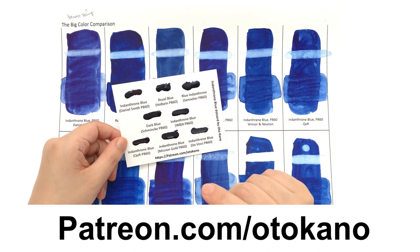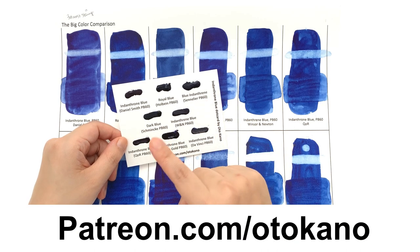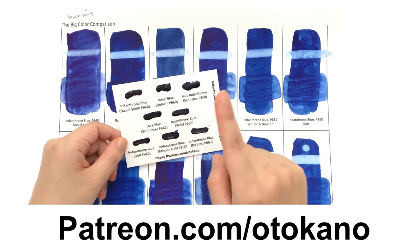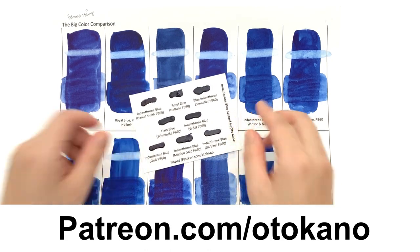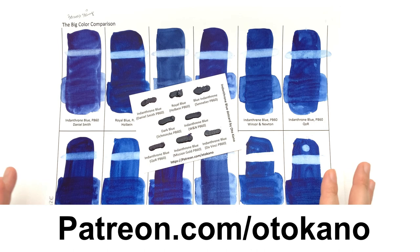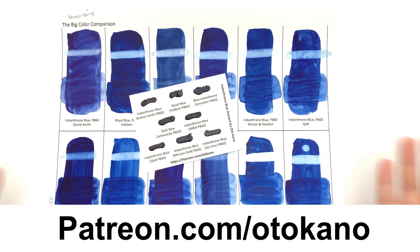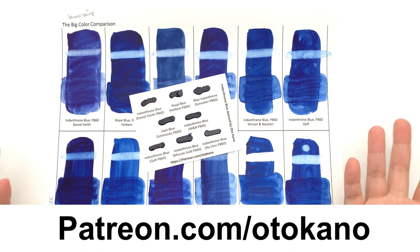It has the Daniel Smith, the Holbein, the Sennelier, the Schmincke, the Windsor Newton, QoR, Mission Gold, and Da Vinci. So if you do fancy trying these colors out for yourself at home and you want to do these tests, then sign up for the $17 tier or more, and then you get the dot card as well as a whole host of other rewards that are totally awesome. Come and join our community. That's patreon.com/ottocarno.